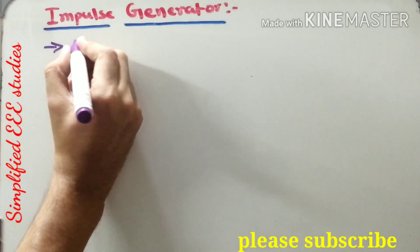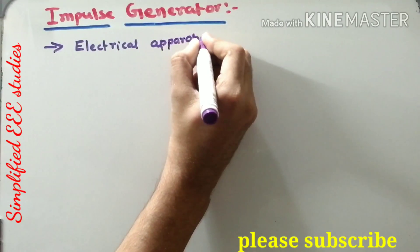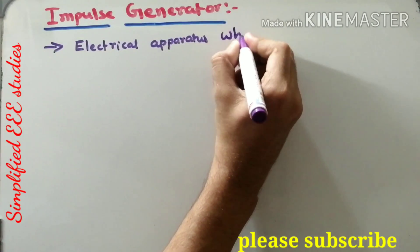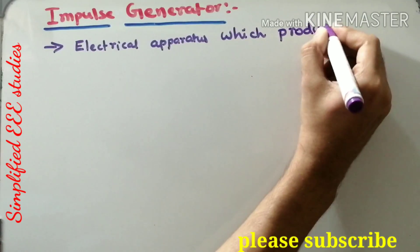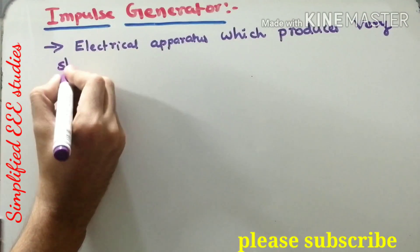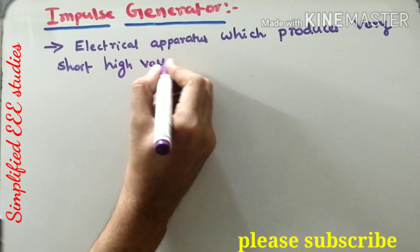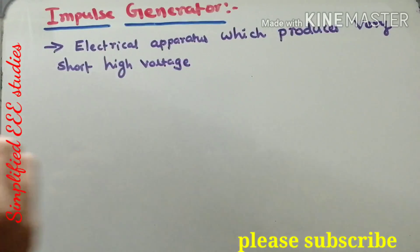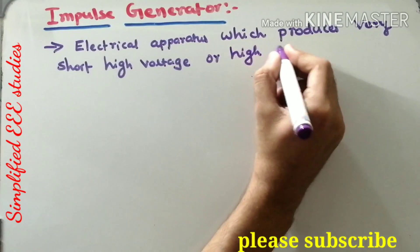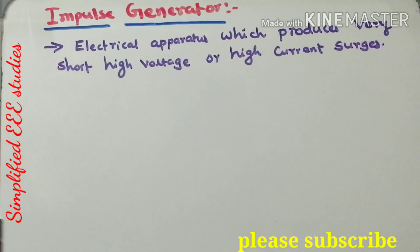An impulse generator is an electrical apparatus which produces very short, high voltage or high current surges. It is possible to generate impulse waveforms with the help of an impulse generator — it may be in the form of high voltage or high current, which is having very short duration.